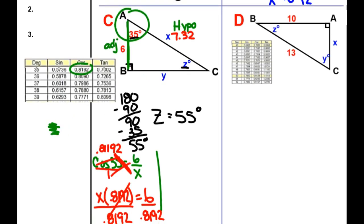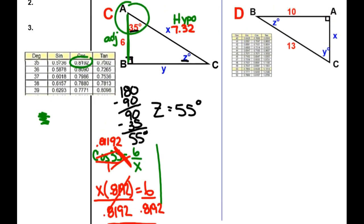Now we're going to go and find out what Y is and you can do one of two things. You can use opposite and hypotenuse which would be sine of 35 equals Y over 7.32, or you could simply use Pythagorean theorem. 6 squared plus Y squared equals 7.32 squared. You could do whichever one you want, both will solve to get you the right answer.